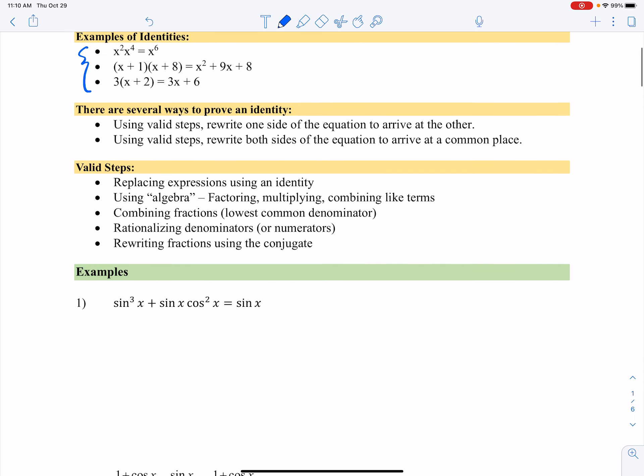The valid steps we're going to be using - keep in mind what steps you've used to simplify expressions in the past. You can replace expressions using an identity. That's going to come up sometimes. Most of the rest is just using algebra.